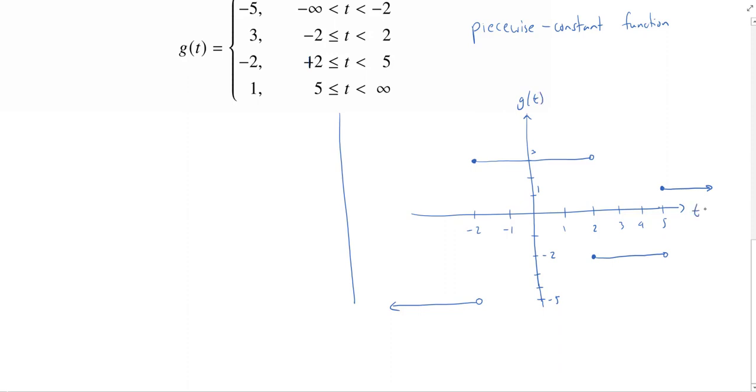And so if we want to write this as a unit step function, we always like to work these left to right. So g of t equals—and we notice it starts at negative five. So we can actually just put negative five here. That's how it's been for all eternity, right? It's been negative five. But then something happens at negative two. So what's going to happen? Well, it's going to go up. So let's put a plus and we're going to have a u_{-2} of t.